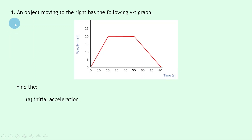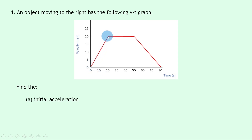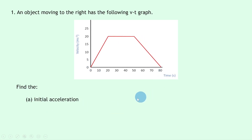In our one and only example, it says an object moving to the right has the following velocity-time graph. You can see the object starts from rest, then has a uniform acceleration, followed by a constant velocity, and then a uniform deceleration to rest. Part A says to find the initial acceleration.